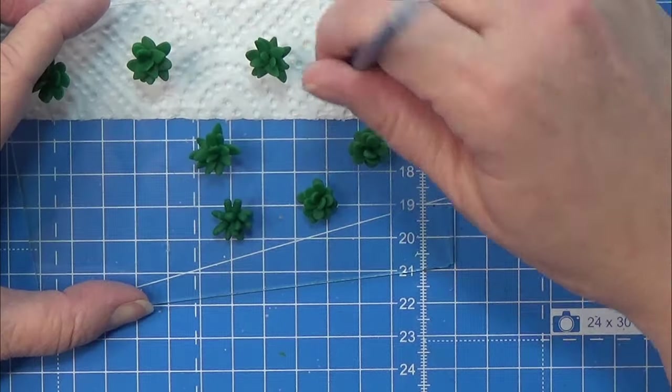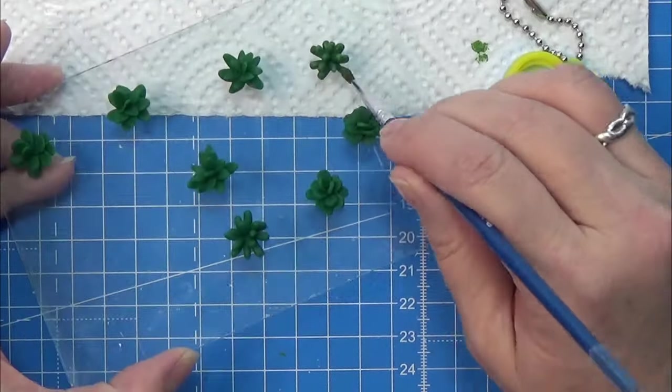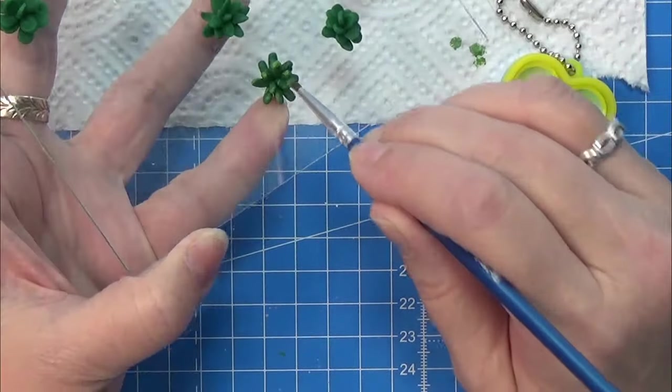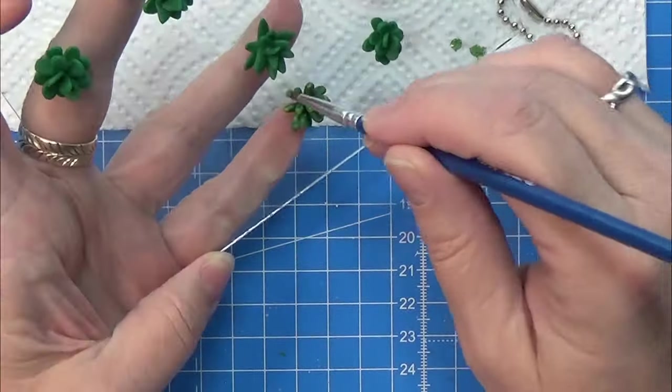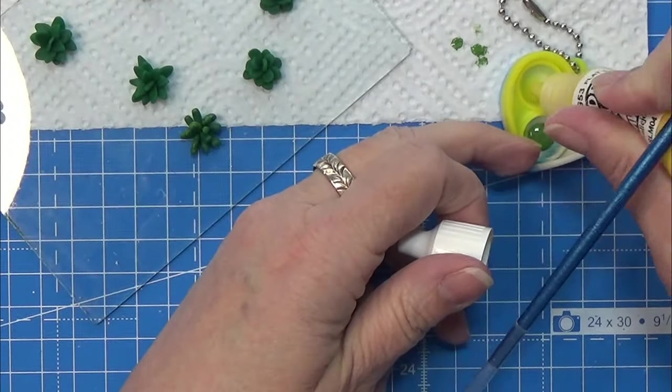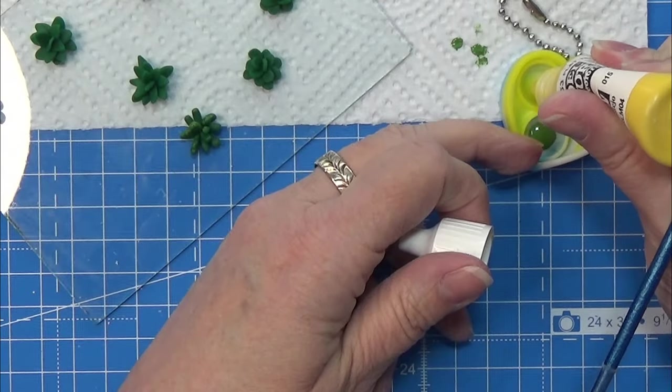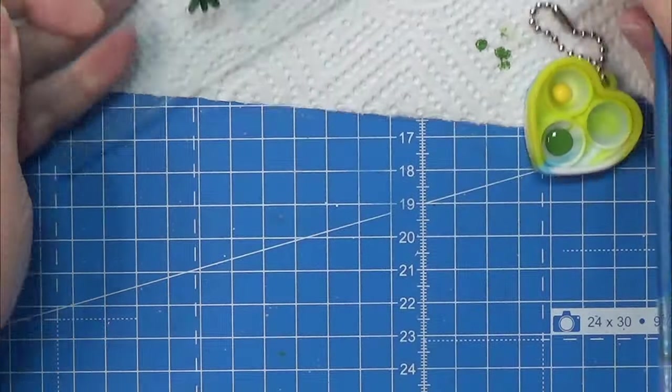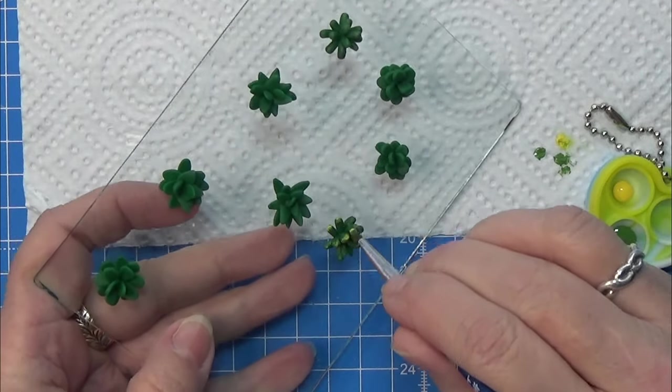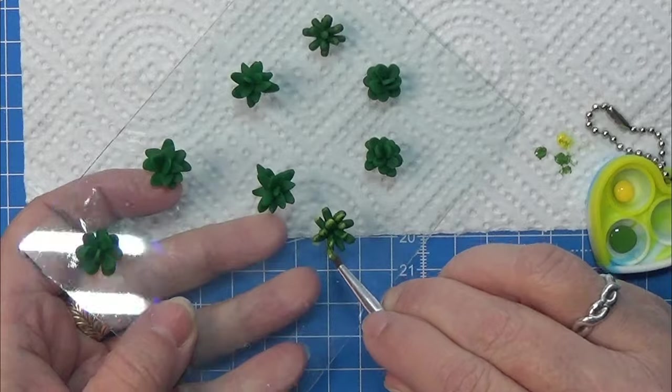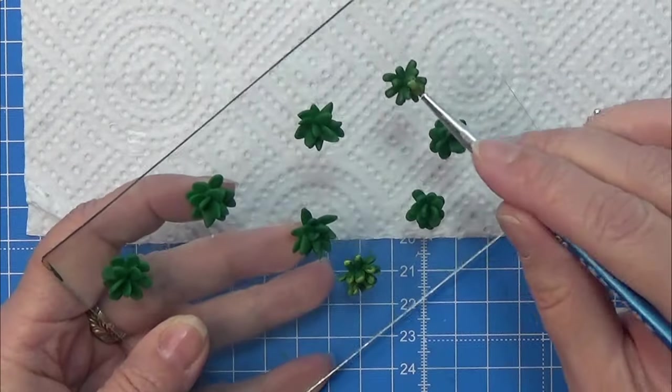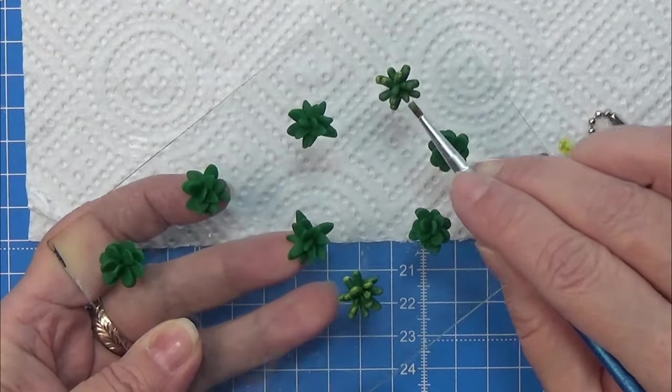When they have baked and they have cooled down, I am using some light green paint, again my Vallejo green, and I'm just dabbing on the ends of the flowers. You can use a tiny bit of yellow and a tiny bit of white as well if you want to, you can even go with purple, that would be very nice as well. I'm just keeping it easy with the green and the yellows here. Do this on all of your plants and your plants are ready.